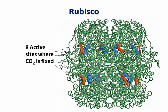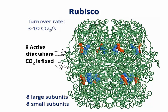The enzyme Rubisco is a large protein consisting of eight large peptide chains and eight small peptide chains. The active sites are found in the large subunits, with one active site per subunit. Despite the relatively large number of active sites, Rubisco is both slow and inefficient. While the turnover rate of most enzymes is in the order of several thousand molecules of substrates per second, Rubisco can process only three to ten molecules of carbon dioxide per second, making it a very slow enzyme.